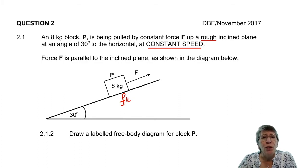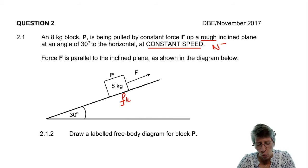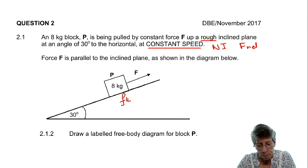Which law of Newton are you supposed to use? If it's constant speed, that means I'm working with Newton's first law, and I will start with F net being equal to zero.